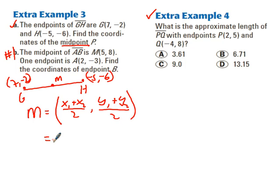And so, average of the x values. We have 7 plus a negative 5 divided by 2, comma, negative 2 plus negative 6 divided by 2. 7 plus negative 5 is 2 divided by 2 is 1. And that gives us negative 2 plus negative 6 is negative 8 divided by 2 is negative 4.